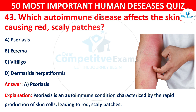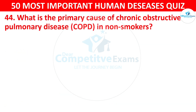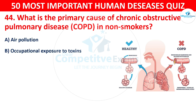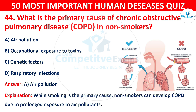Question 44: What is the primary cause of chronic obstructive pulmonary disease in non-smokers? Your options are: A) Air pollution, B) Occupational exposure to toxins, C) Genetic factors, or D) Respiratory infections. The correct answer is A — air pollution. While smoking is the primary cause overall, non-smokers can develop COPD due to prolonged exposure to air pollutants.